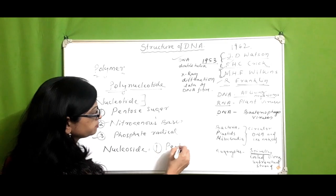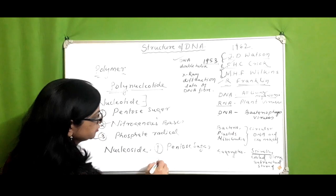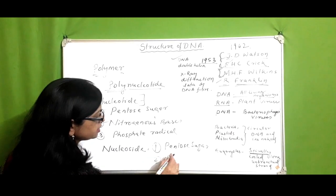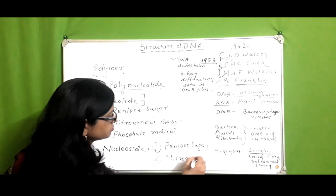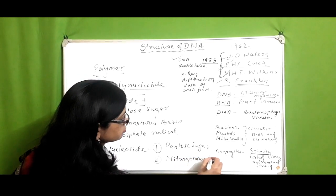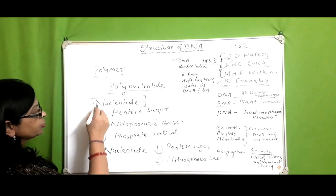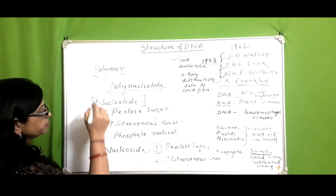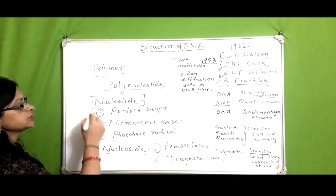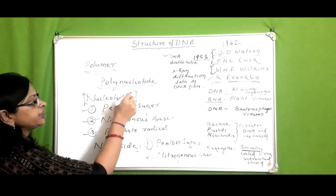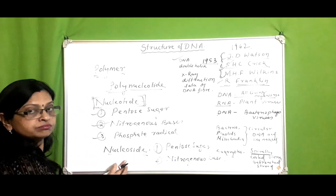A nucleoside is composed of a pentose sugar and a nitrogenous base only. So: nucleotide minus the phosphate radical equals nucleoside. In other words, nucleotide minus phosphate (P) equals nucleoside.